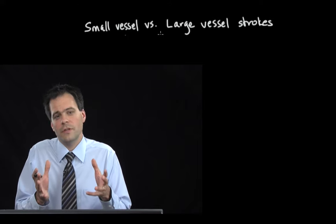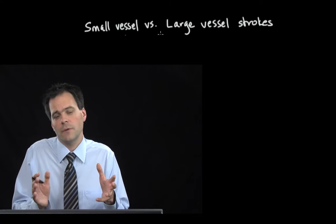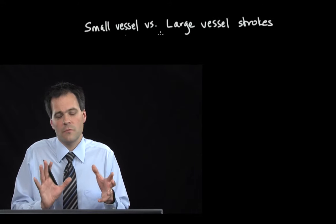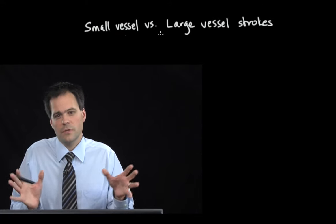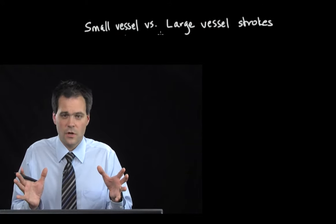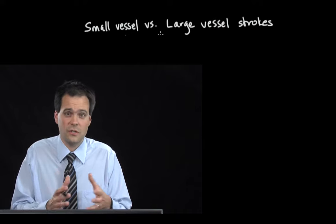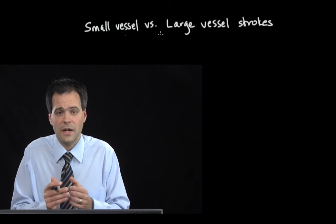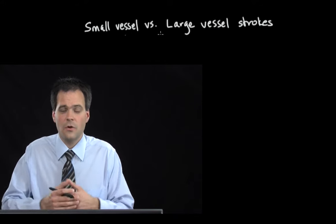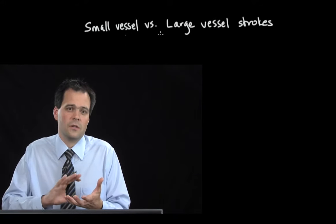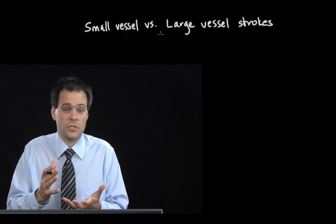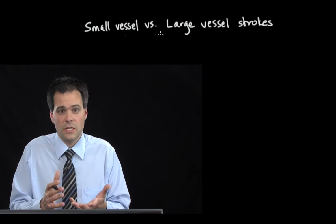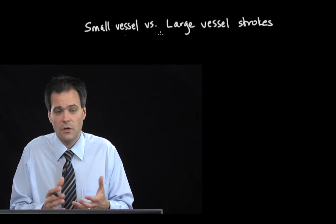The reason small vessel strokes occur is usually from years and years of hypertension or diabetes — those are the two main risk factors. And over time, that causes this pathologic change in the blood vessels called lipohyalinosis.